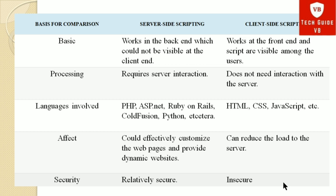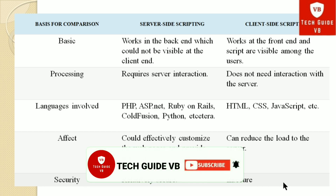Considering the third comparison point — the languages involved — server-side scripting includes PHP, ASP.NET, Ruby on Rails, ColdFusion, Python, etc. For client-side scripting, HTML, CSS, and JavaScript are the languages involved. For the fourth point — effect — server-side scripting can effectively customize web pages and provide dynamic websites, while client-side scripting can reduce the load on the server because it only requires the client.